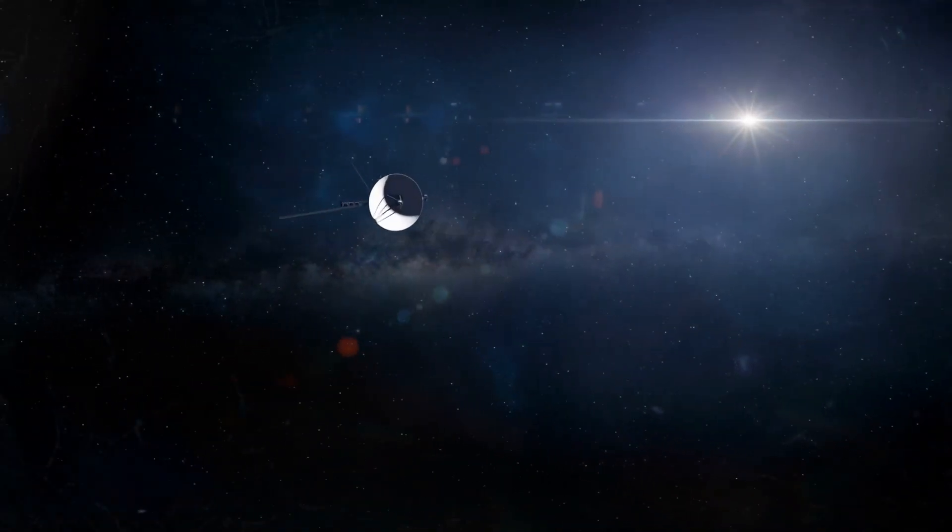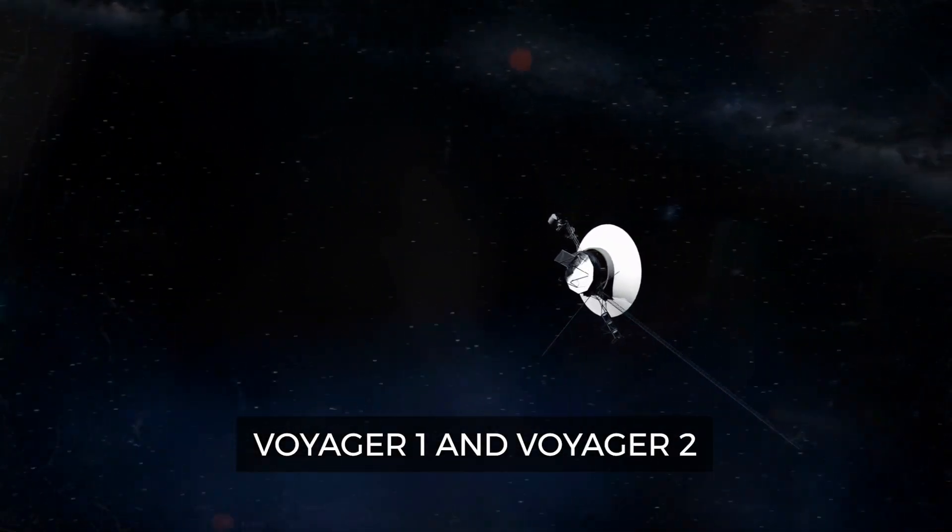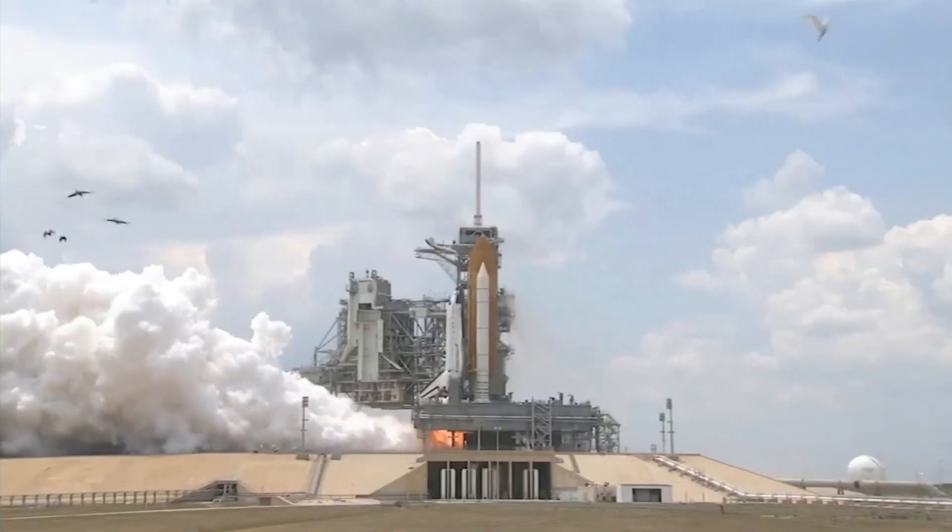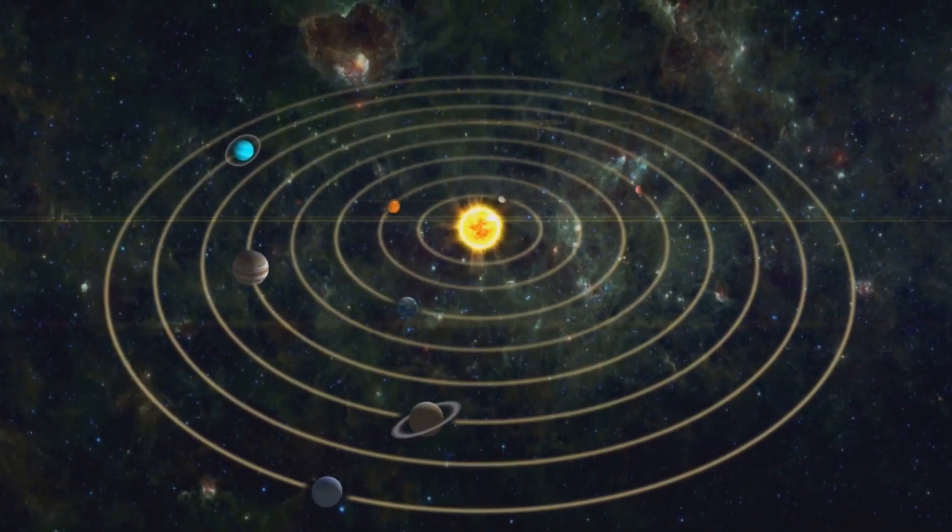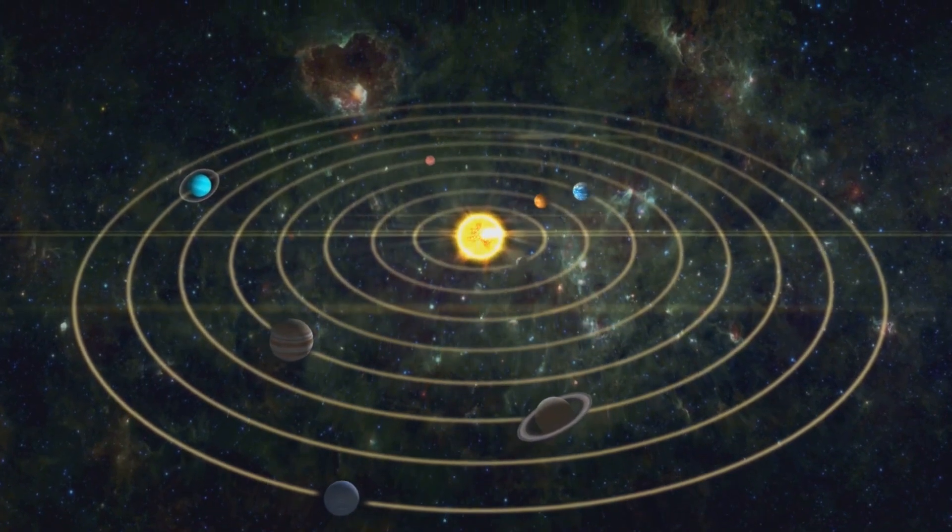The Voyager program consists of two robotic interstellar probes called Voyager 1 and Voyager 2. They were launched way back in 1977, making them the longest space mission in human history. Their journey has taken them to the outer edges of the solar system, a feat no other craft has achieved.